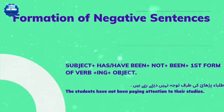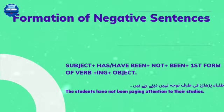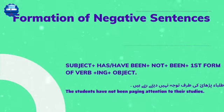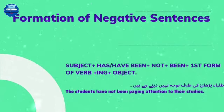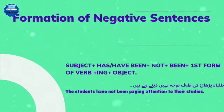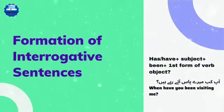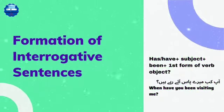Formation of negative sentences: subject plus has or have plus not plus been plus first form of verb plus -ing plus object. For example, in Urdu: 'Tulba pardhai ki taraf tawajoh nahi daytay rahi hain' — meaning: 'The students have not been paying attention to their studies.'